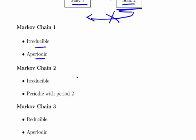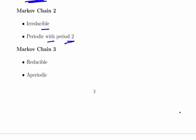Irreducible and aperiodic for Markov chain 1. Irreducible and periodic with period 2 for Markov chain 2. Just to be clear, aperiodic means not periodic. Reducible and aperiodic for Markov chain 3.